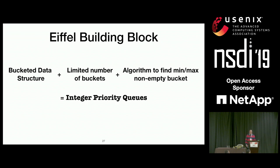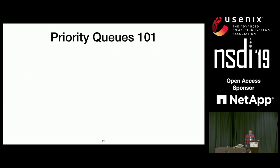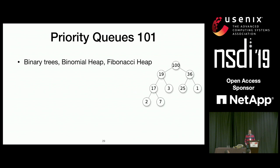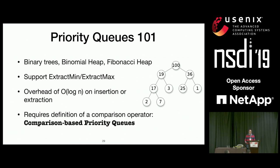The only remaining part is developing an algorithm to find the minimum or maximum non-empty bucket efficiently — that led us to integer priority queues. In a typical algorithms course, you hear about priority queues as binary trees, binomial heaps, or Fibonacci heaps, with the minimum or maximum element at the root. They support extract-min or extract-max with O(log n) overhead for insertion or extraction, and only require defining a comparison operator. These comparison-based priority queues are powerful because they are generic.